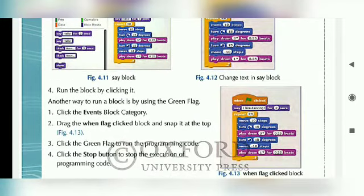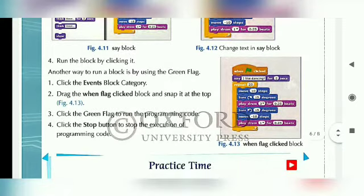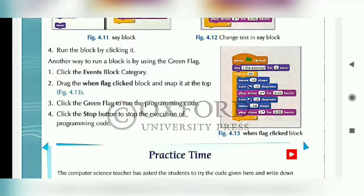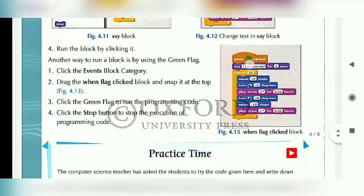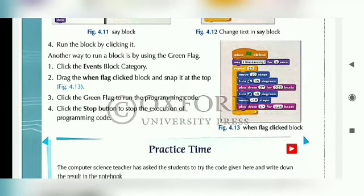Step 4: Run the block by clicking it. Another way to run the block is by using the green flag. जब हमें run कराना होगा तो हम लोग green flag पर click करेंगे। Step 1: Click the Events Block Category. Drag the 'When Flag Clicked' block and snap it at the top — Figure 4.13. बच्चे Figure 4.13 में देखेंगे। 'When Flag Clicked' block सबसे ऊपर, Say block के ऊपर, रखा गया है।